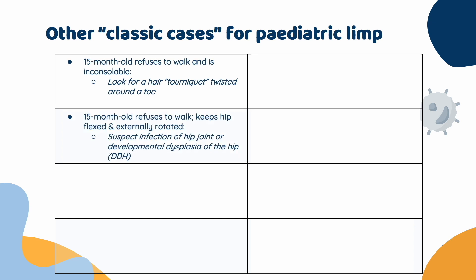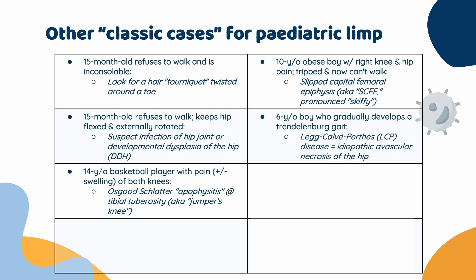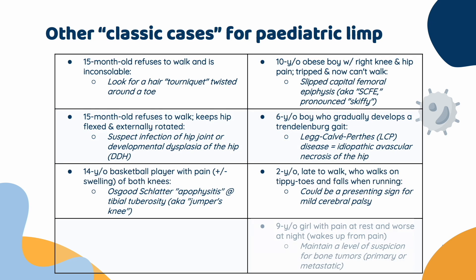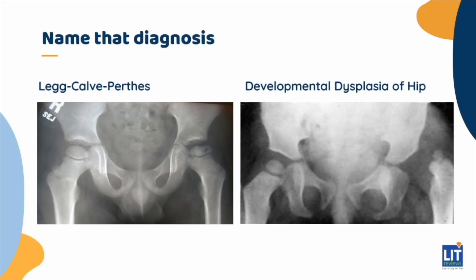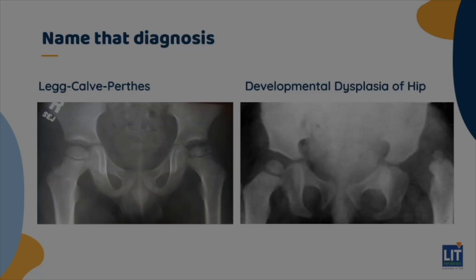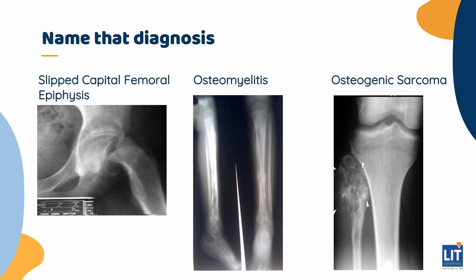Here are some vignettes of classic cases of pediatric limp that you'll want to learn to recognize, both for exams and for patients you'll encounter. Similarly, here are some radiographic findings that are important to be able to recognize — they'll be both on the boards and things you'll encounter clinically. I'll leave you with the opportunity to review these on your own time.